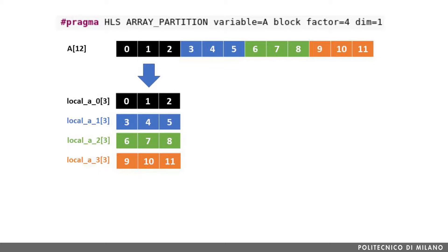Each partition contains 3 contiguous elements from the original array. In particular, we can see that the first partition contains elements 0, 1, and 2; the second partition contains elements 3, 4, and 5, and so on. This type of partitioning is useful if we need to access in parallel elements of the array coming from two different partitions, such as an element in the first half and in the second half of the array.